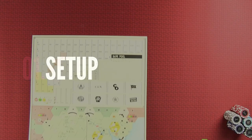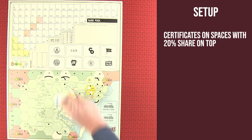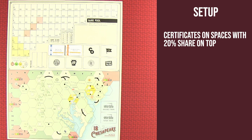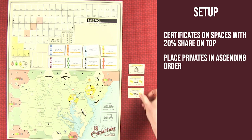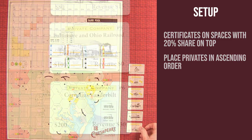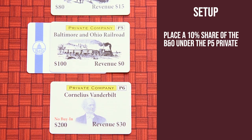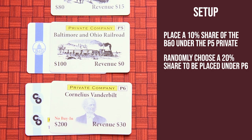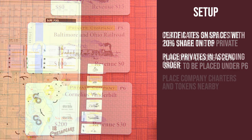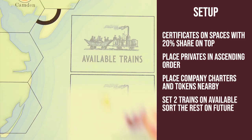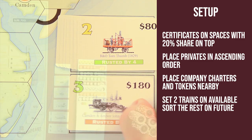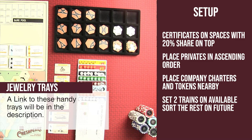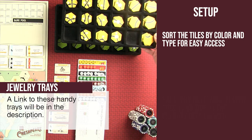Now let's move on to setup. Begin by placing the board in the center of the table. Place the share certificates on indicated spaces on the board with the 20% president share on top. Note that the 30% share is only used in a two-player game. Place the privates near the board starting with P1 at the top going down to P6 at the bottom. Place one share of the Baltimore and Ohio Railroad underneath P5. Then randomly select one of the eight companies and place the president share underneath P6. Place the company markers and charters nearby. Place the trains organized in ascending order by value. Sort the track tiles by color and type and place near the board. You'll start with yellow and advance through the other colors as the game progresses.